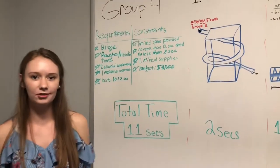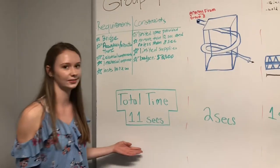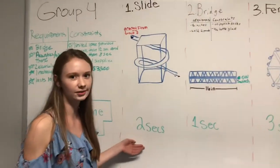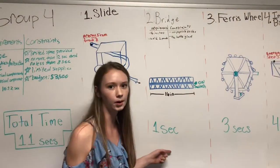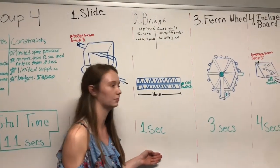The estimated time for our Rube Goldberg is 11 seconds. The ball will take 2 seconds to travel down the clear tubing and transfer energy onto Step 2. The ball will take 1 second to travel across the bridge.